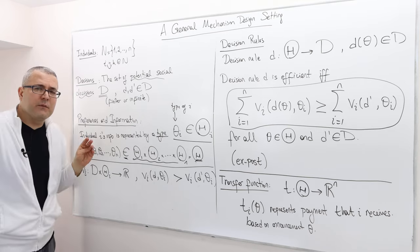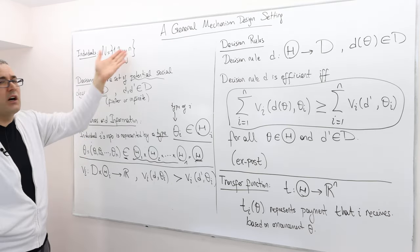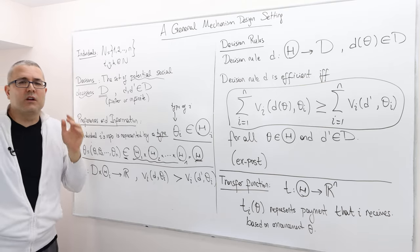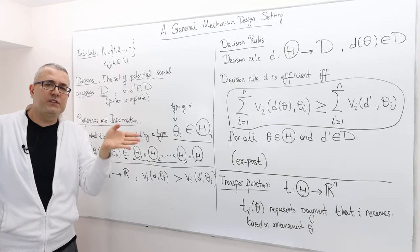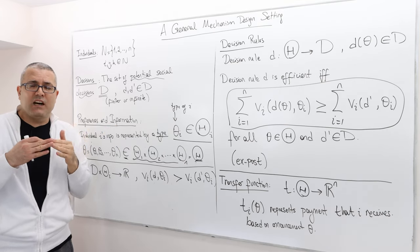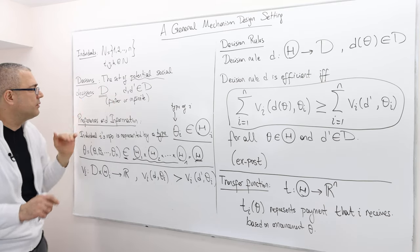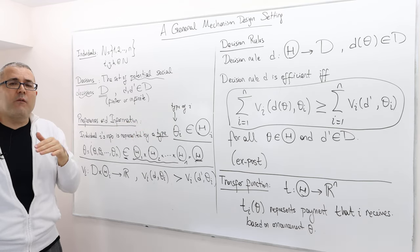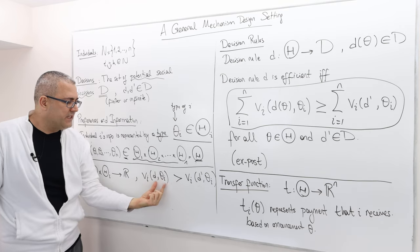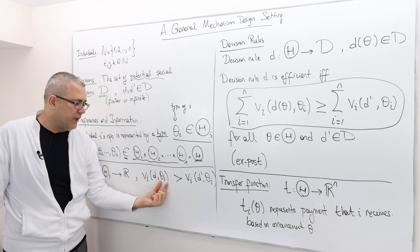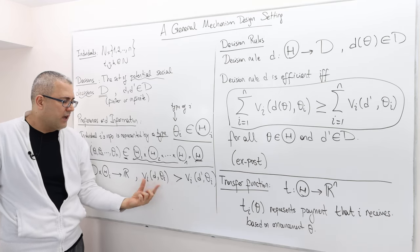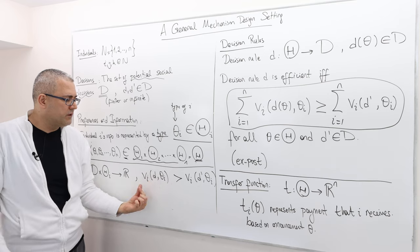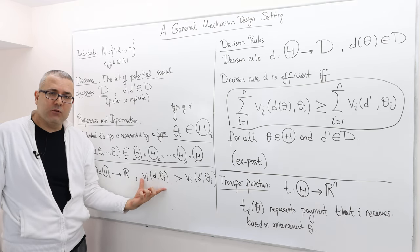What about the auction environment? The individuals are the bidders who would like to participate in the auction. The decision is simple: 0 or 1 — who's going to win, who's going to lose. So d_i is 0 if I lose and 1 if I win. The type of bidder i is how much he values the good. So v(d, theta_i) is: if I win, how much I value the good given my true valuation; and if d is 0, meaning I lose, I get 0 utility. If I win, my valuation depends on my type.